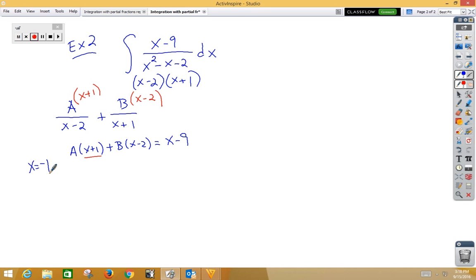x is negative 1 works. If I plug in the negative 1 for my x's, I would get negative 3B is equal to negative 10, so B would be 10 thirds.